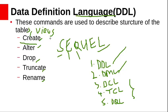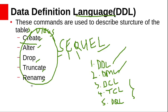Oracle database implicitly commits the current transaction before and after every DDL statement. All DDL commands — CREATE, ALTER, DROP, TRUNCATE, and RENAME — are committed automatically. Even if you close the SQL command line, the tables will exist within the database and all commands will be saved. However, DML commands are not implicitly committed.